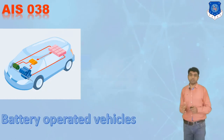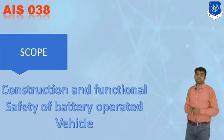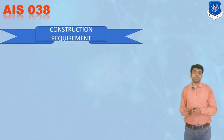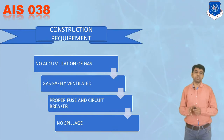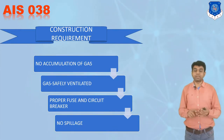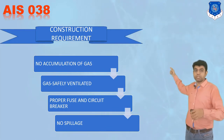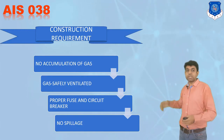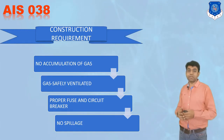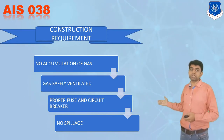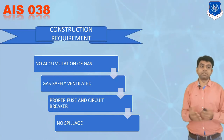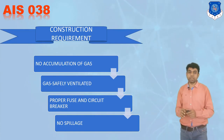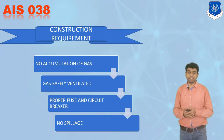The third standard is AIS 038, which is for the construction and safety features of battery-operated vehicles — a topic of much discussion nowadays. The construction requirements specify that there should be no accumulation or generation of gases, as that can lead to fire. Any gas that is generated must be evacuated or ventilated easily and in minimum time. There must be proper fuses and circuit breakers so that in any hazard the circuit can be broken, and there should be no spillage of fluid from the battery terminals, especially when the vehicle is ascending a gradient.